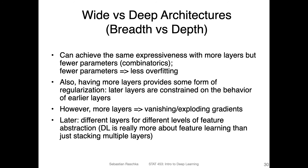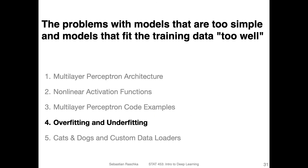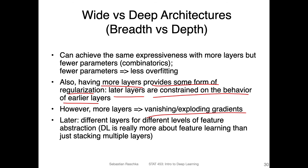What's also nice about having more layers is that we have some form of regularization, because later layers are constrained by the behavior of earlier layers. However, we have the vanishing and exploding gradient problems. We will talk more about that later. Now it's time to look at the code example — let me pause this video and start my Jupyter notebook.